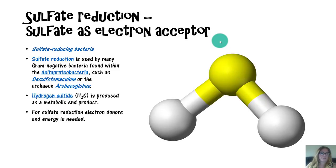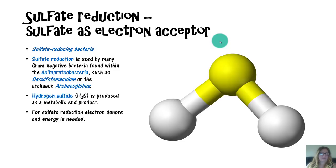Sulfate-reducing bacteria are found in the delta-proteobacteria group, such as Desulfotomaculum or the archaean Archaeoglobus. Hydrogen sulfide is produced as a metabolic end product of sulfate reduction. For sulfate reduction, electron donors and energy are needed.